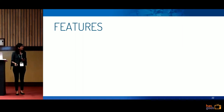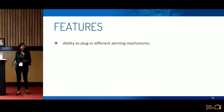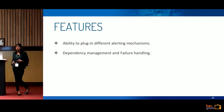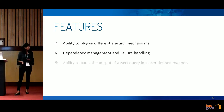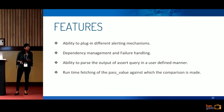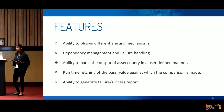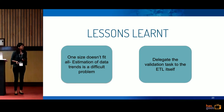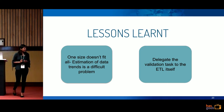Features of this framework include: pluggable alerting mechanisms such as email or Slack operators; dependency management and failure handling — if checks are critical we stop the pipeline, otherwise we continue; user-defined parsing of assert query output; runtime fetching of pass values for comparison; and the ability to generate both failure and success reports, usable for reporting rather than just alerting. The lesson learned is that estimating data trends is a difficult problem needing precision, and delegating validation to the ETL itself solves several issues.